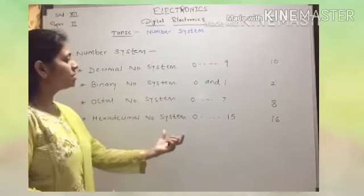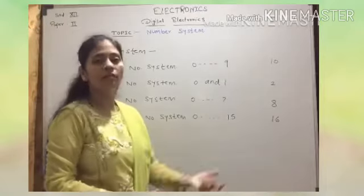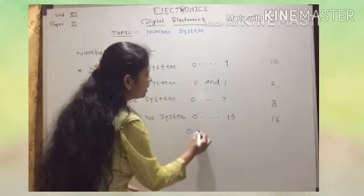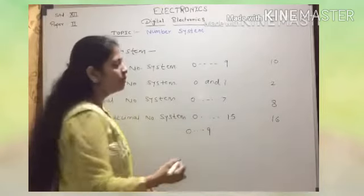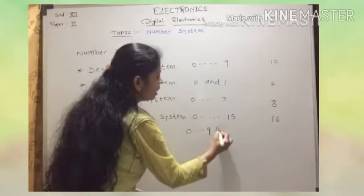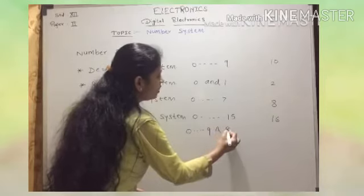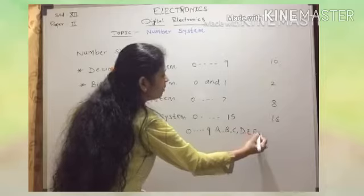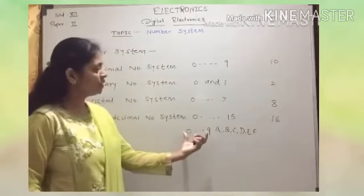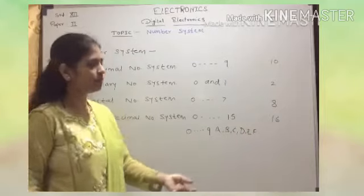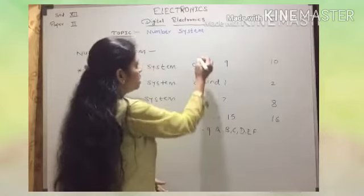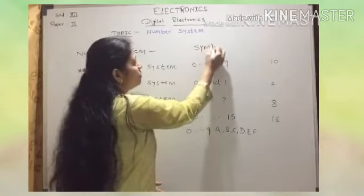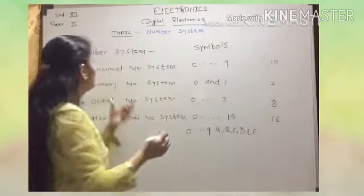In the hexadecimal number system, we are not just using numbers — we are using alphabets also. We represent 0 to 9 in number form, and from 10 onward we use alphabets: A, B, C, D, E, and F. So we are using both alphabets and numbers here, and these are the symbols used in this number system.